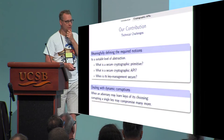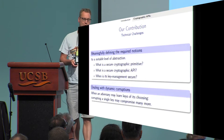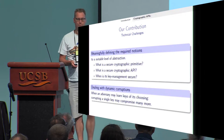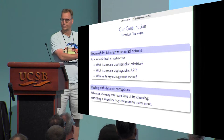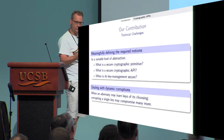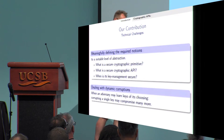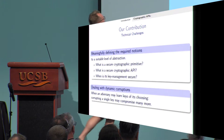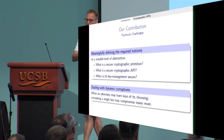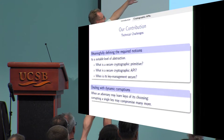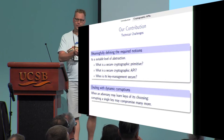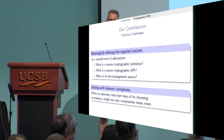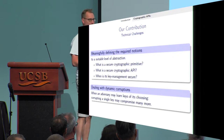The technical challenge is that you first need to come up with suitable definitions: what is a secure cryptographic primitive? This is work done before in the context of TLS, where they also wanted to combine the handshake protocol with as many primitives as possible. What is a secure cryptographic API? And when is its key management secure?